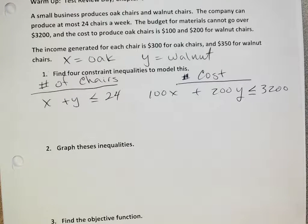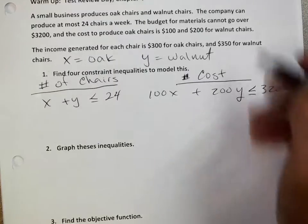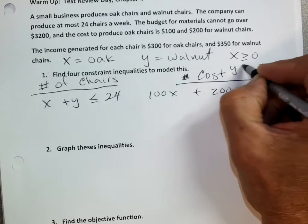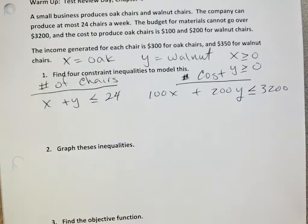But it says four constraints. So there's two more and hopefully they're obvious to you. The other two, x has to be greater than or equal to zero, and y has to be greater than or equal to zero. You can't make negative chairs. Theoretically you cannot make negative chairs. I have one kid say, well, you can make them and break them. That's a negative chair. No, no, that's, you've made a chair, I just have a broken chair. So it's impossible to have negative chairs.